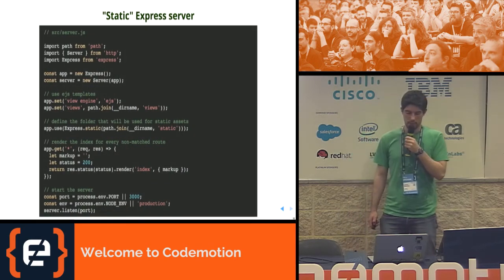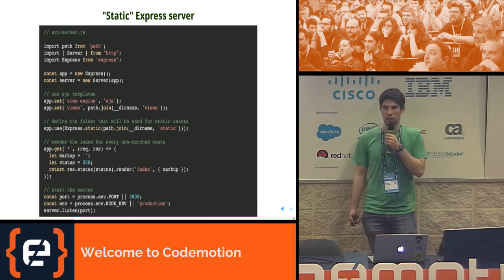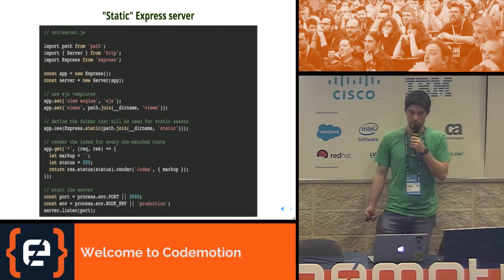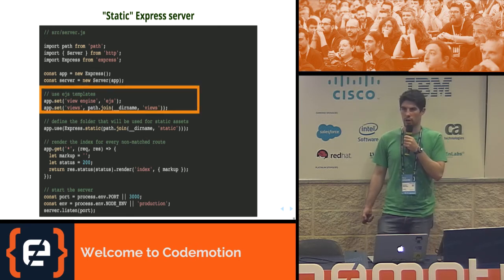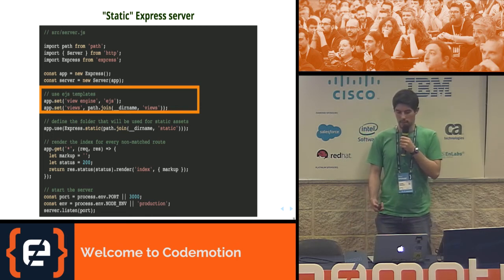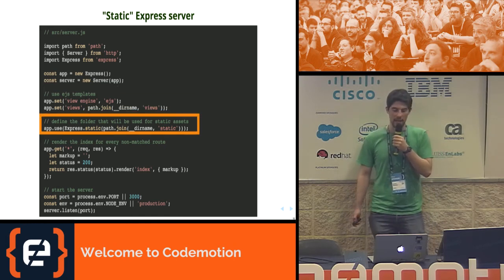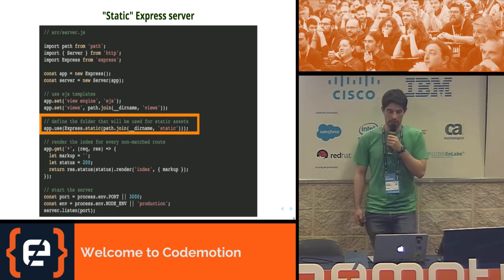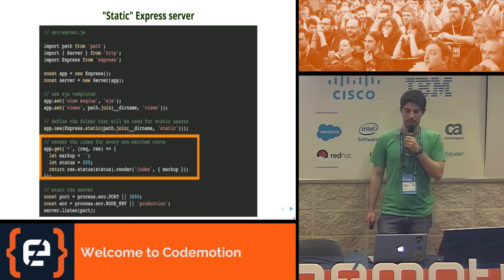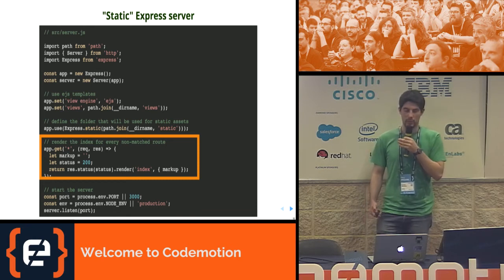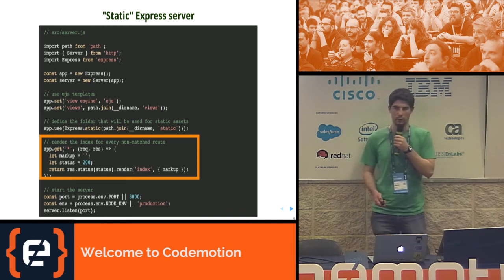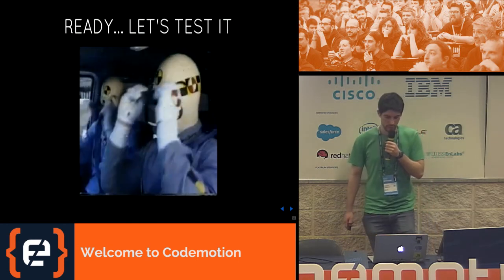One last thing before we can run our first version of the application: we want a little server to expose those files through HTTP. We use Express because it will come in handy later when we add universal rendering. We configure EJS as a template engine, expose every static file — CSS, images — from the static folder, and then for any request, regardless of path, we render the index without any markup, since routing at this stage is only on the client side.